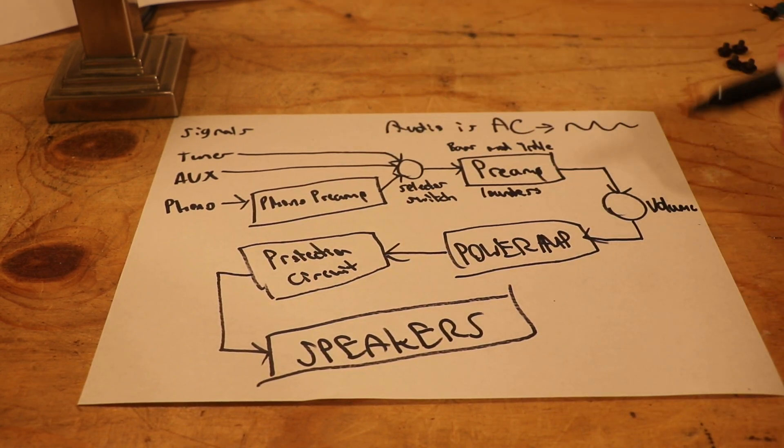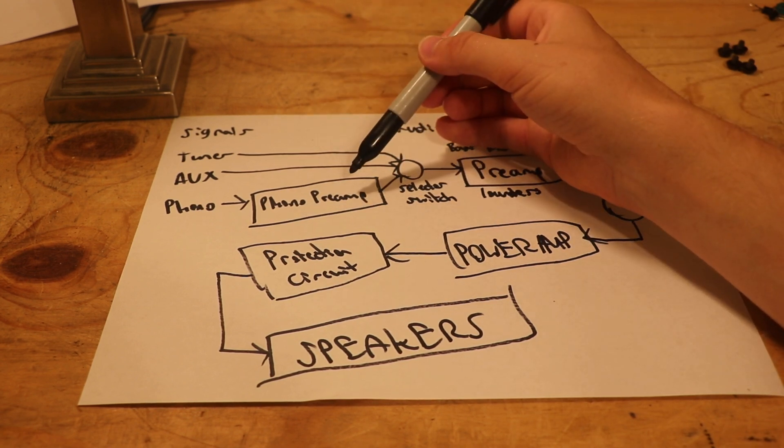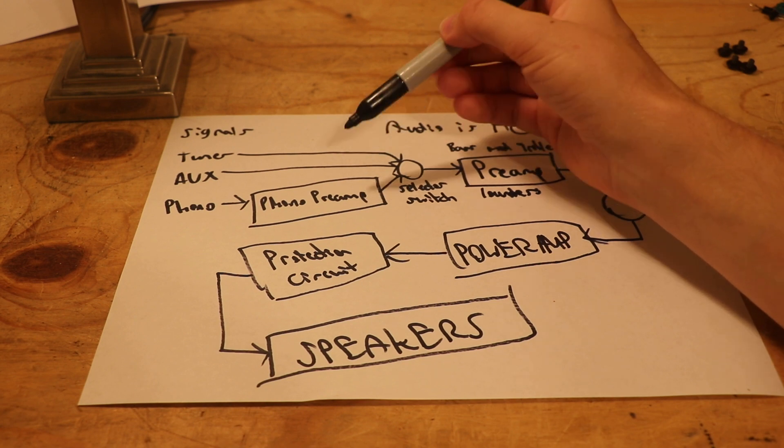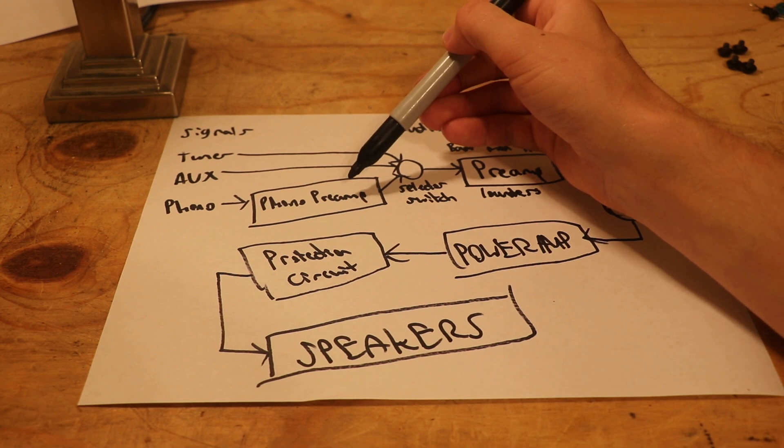It's worth noting that not all receivers have a phono preamp. Any vintage receivers can have a phono preamp, but a new one might not. So, if you're buying new, make sure you've got a phono preamp if you want that, otherwise you'll have to buy one separate.